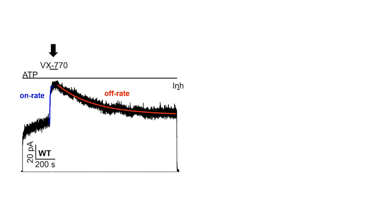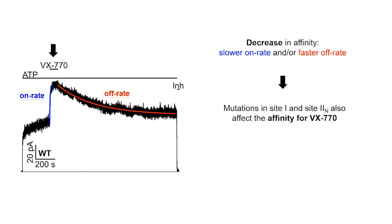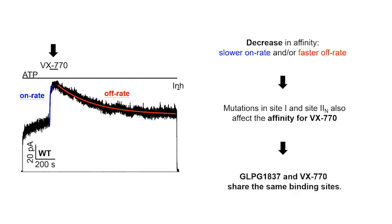We used a different approach to test the affinity for VX470 due to technical reasons. Instead of dose-response experiments, we measured the apparent on-rate and off-rate kinetics to assess the change in affinity for VX470. A slower on-rate or faster off-rate suggests a decrease in affinity. Our data demonstrate that mutations in PSY1 and PSY2N also affect the affinity for VX470, supporting our previous proposition that GLPG1837 and VX470 share the same binding sites.